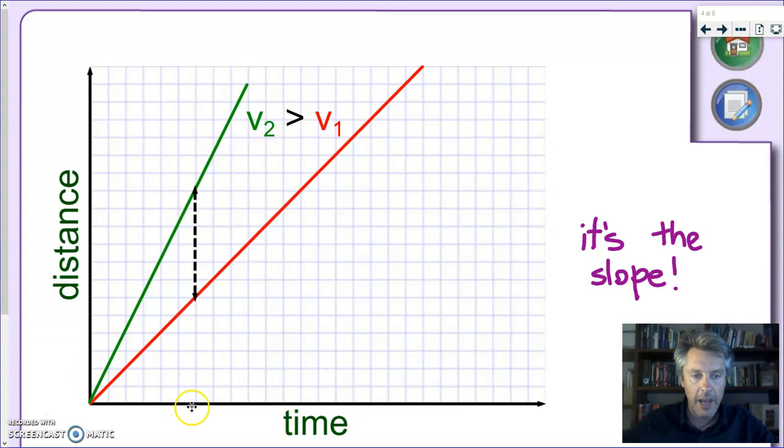Let's look what happens, for instance, here. At this time, this is the position of the object number one, the one represented by the red line. And this is the position of the second object. Now, it's obvious that this object is ahead. So, we can say that V2, the speed of the second object, is bigger than the speed of the first object.